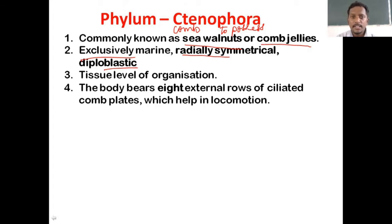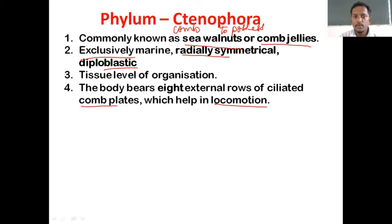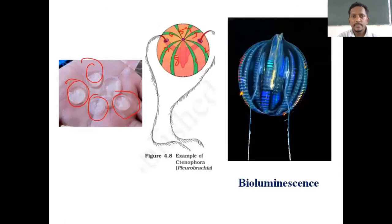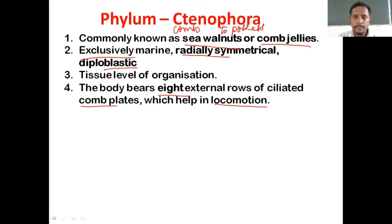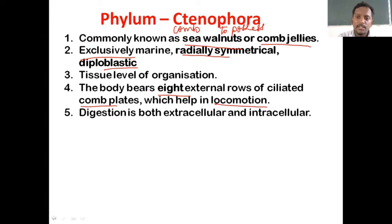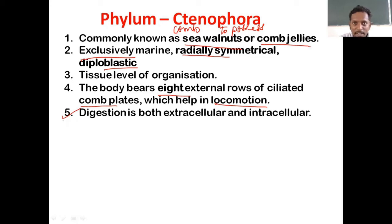The body possesses 8 external rows of ciliated comb plates which help in locomotion — that is very important from the examination point of view. The comb plates have 8 external rows of small hair-like ciliated structures that help the organism in locomotion. Digestion is both extracellular and intracellular. Digestion within the cell is called intracellular, and digestion outside the cell is called extracellular. Both types of digestion are operational in these organisms.